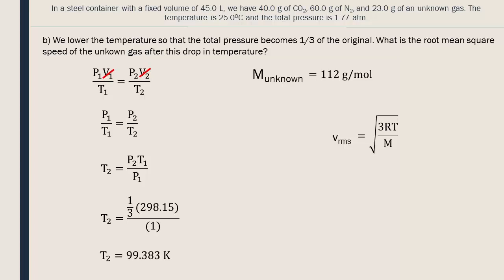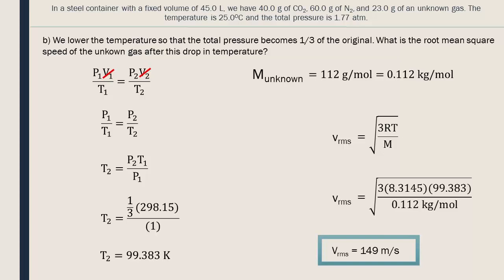We insert this new temperature value into the root mean square speed equation. Be careful! We need to remember that this equation uses molar masses in kilograms per mole, since it uses SI units. In part A, we found the molar mass to be 112 grams per mole, which gives 0.112 kilograms per mole. The root mean square speed is 149 meters per second.